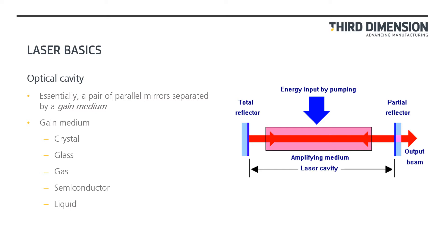The stimulated emission takes place in the optical cavity — essentially a pair of mirrors: a total reflector at one side and a partial reflector at the other. When the cavity is energized by pumping energy — which could be from another light source such as another laser or a flashlight, or electrical energy — the light within the cavity is reflected between the two mirrors. Because the right mirror is a partial reflector, some light passes through, creating the output beam. The gain medium itself can be crystal, glass, gas, a semiconductor material, or even a liquid.